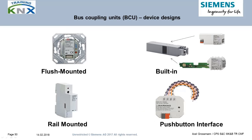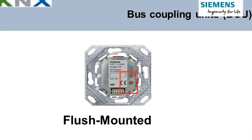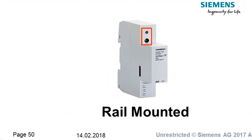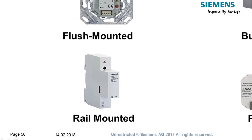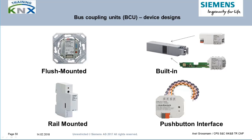Where can you find bus coupling units, and how can they be recognized? On the flush-mounted BCU you can see the PEI, program button, and program LED. The same is true with the rail-mounted version. Both BCUs are the so-called universal classic type, which once were sold by all KNX manufacturers. They would have been exchangeable in principle, but manufacturers didn't want this due to liability for warranty claims in case of malfunction. Therefore, these BCUs eventually vanished from the market.